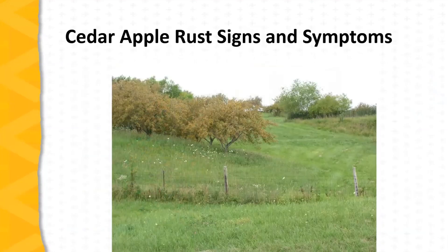In a bad cedar apple rust year, you can see entire tree involvement, as shown in this picture. This is an abandoned orchard that received no care, and it was very noticeable from a long distance away as the trees had an overall bright orange to yellowish cast to them.